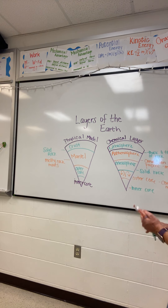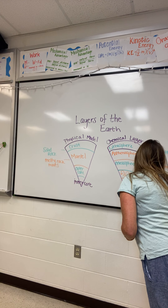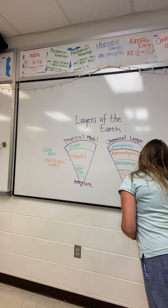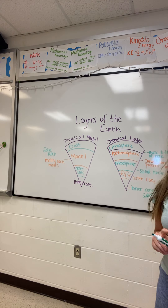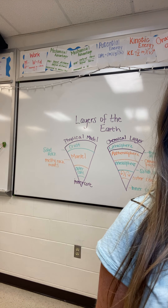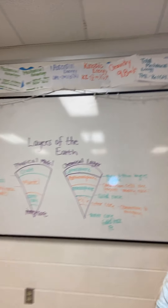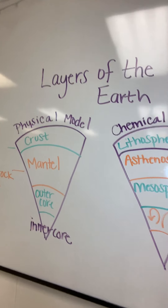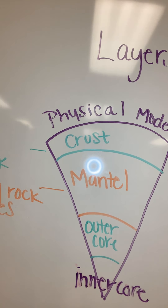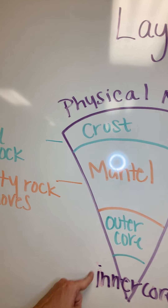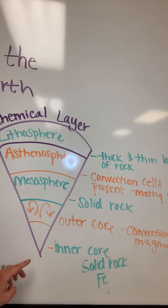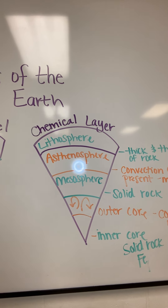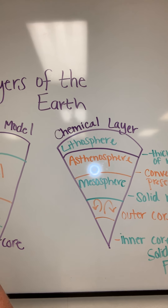The inner core is once again solid, and it is mostly made of iron and nickel along with other heavier elements. So to summarize, we have our physical model with crust, mantle, outer core, and inner core. And we have our chemical layers with the lithosphere, asthenosphere, mesosphere, outer core, and inner core. Hopefully this was helpful — we're going to start diving into the different features and what we can see at each of these layers.